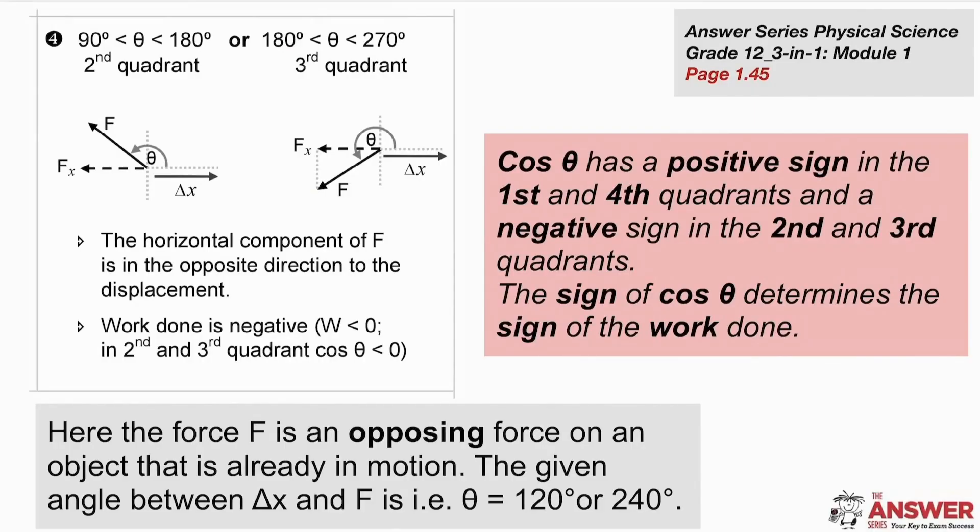When we get to the second or the third quadrant we have a different situation. Now the angle is greater than 90 degrees as we can see over here or even greater than 180 degrees but each time the cos of an angle that size is going to be negative. And so we find that the work done is negative which means that the object loses energy.